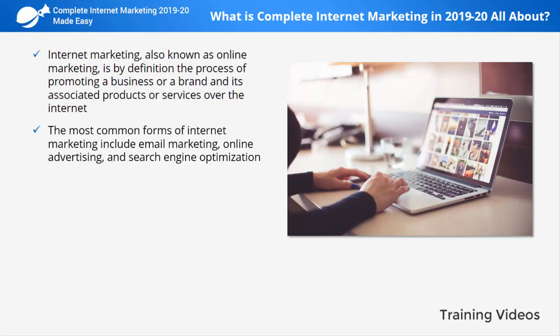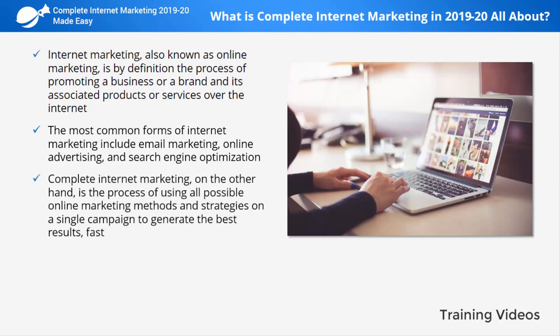Usually, individuals and companies trying to promote a business or brand on the internet focus on one or two methods, but they are leaving a lot on the table. Complete internet marketing, on the other hand, is the process of using all possible online marketing methods and strategies on a single campaign to generate the best results fast.